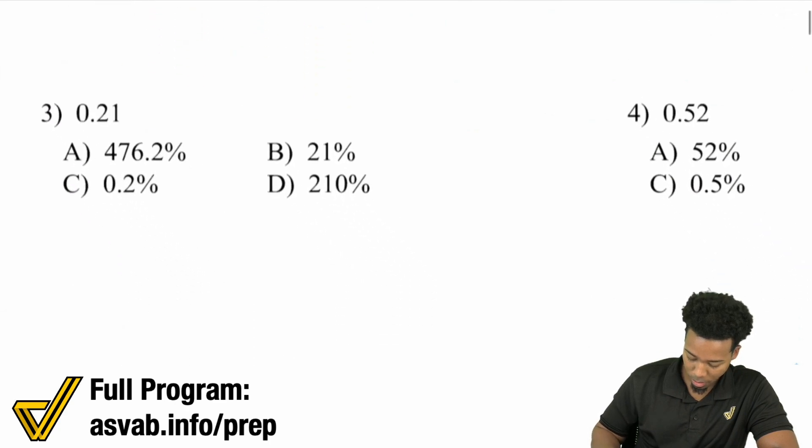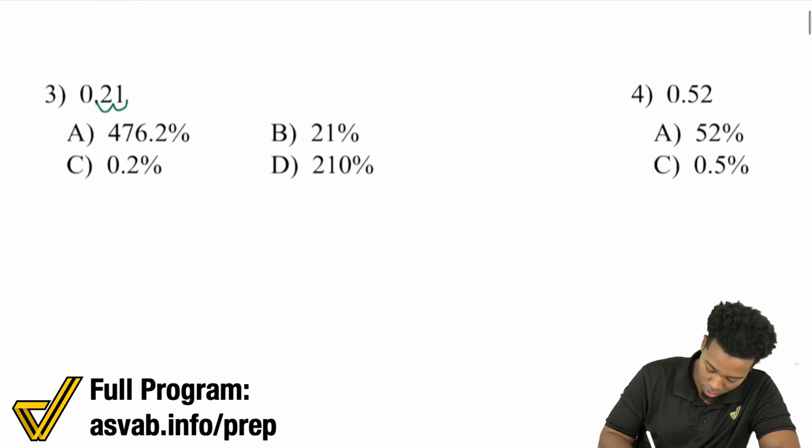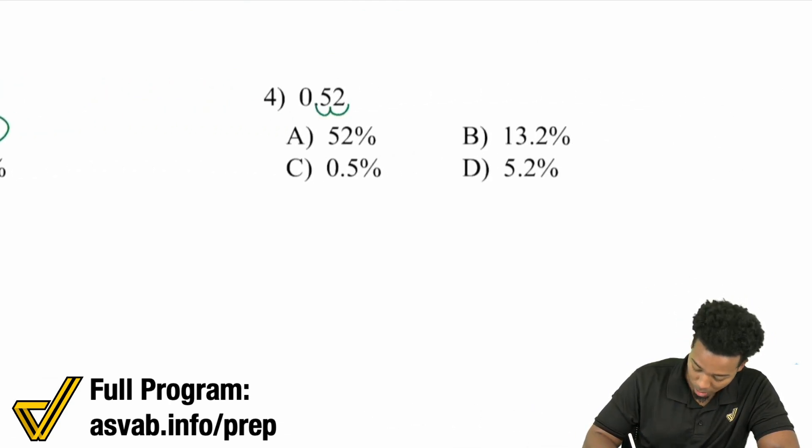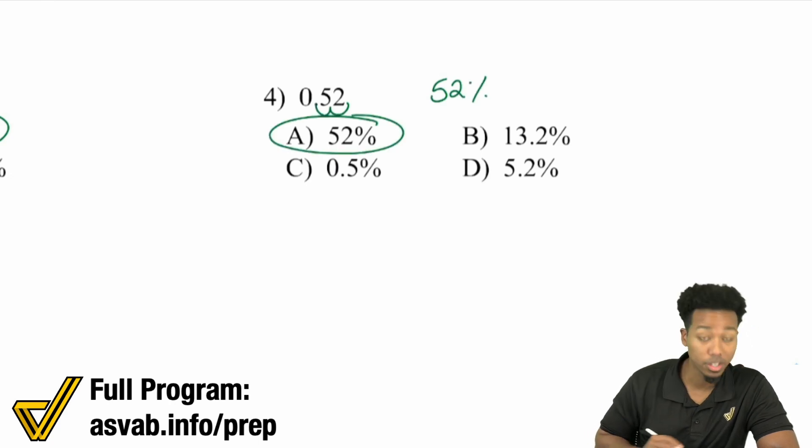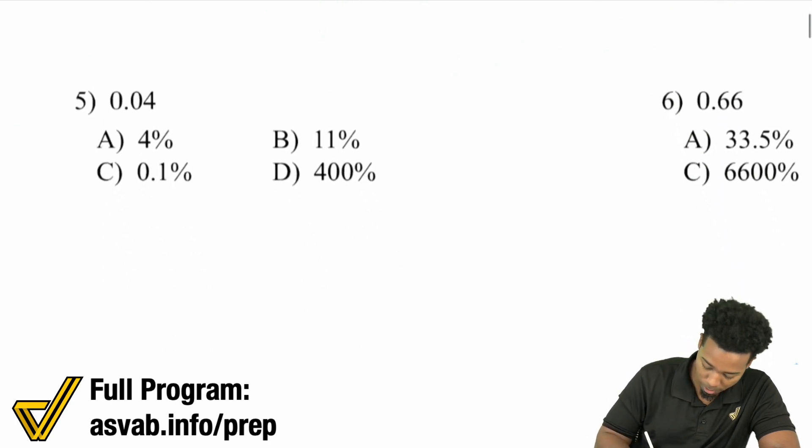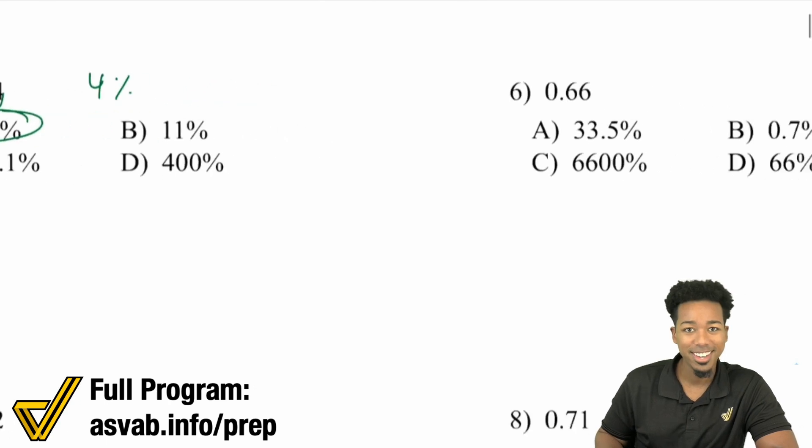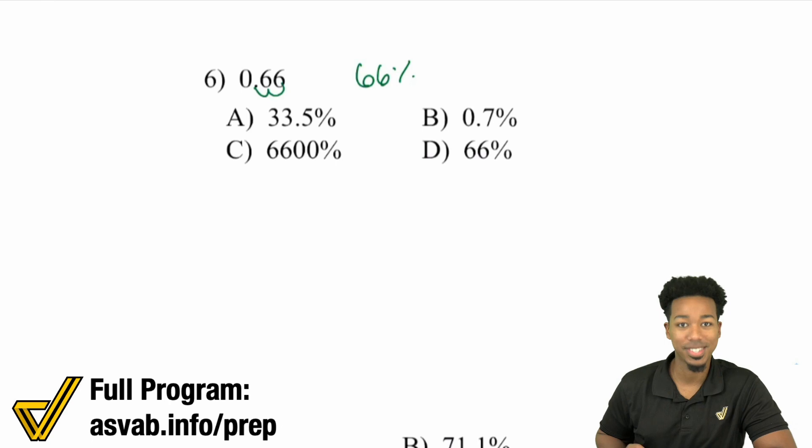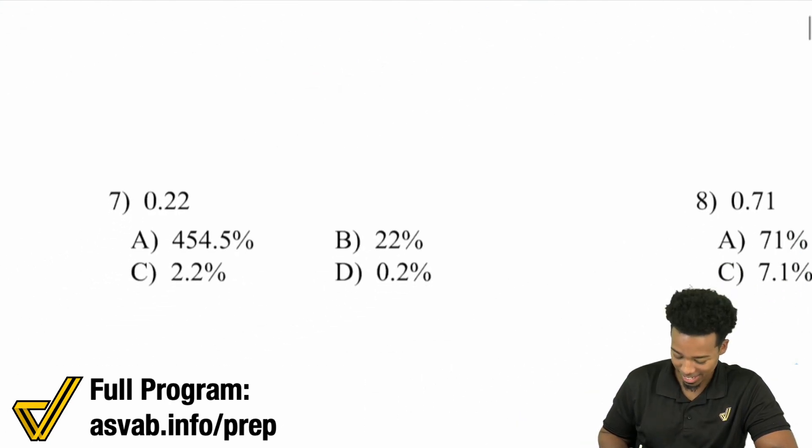Next up, you got 0.21. Move it over. That's 21%. Right there. You got 0.52 over here. Hey, move it over. One, two, 52%. Boom. All good. Let's keep it going here. Okay. You got 0.04. One, two, you got 4% and you're done. You got 0.66. Move it over. 66%. Do you see how easy this is?